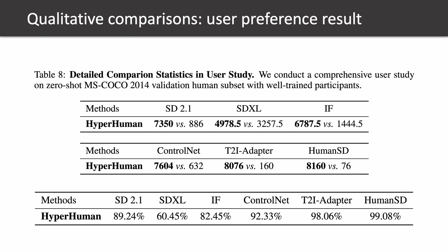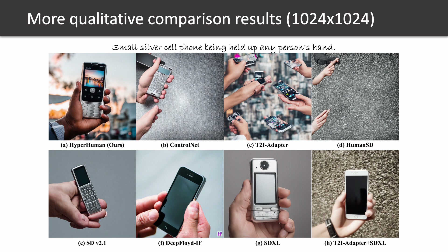Please kindly refer to our paper for more details. Below, we show more qualitative comparison results at 1024 resolution between our method and recent state-of-the-art baselines. It can be clearly seen that Hyperhuman achieves superior generation results, showing better realism, quality, diversity, and controllability.